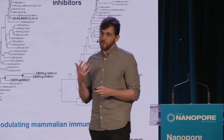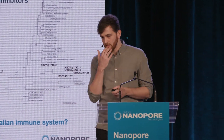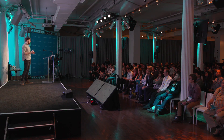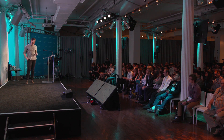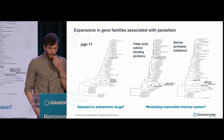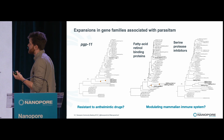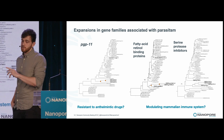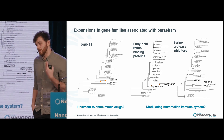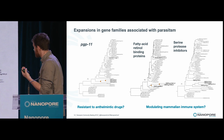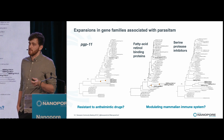We also found expansions in a few gene families. One is PGP11, a gene encoding an ABC transporter in C. elegans, associated with resistance to ivermectin, a widely used anthelmintic drug. It's possible this expansion in C. bovis relates to an ability to withstand drugs being used against the cow. Two other interesting gene families were fatty acid and retinoid binding proteins, and serine protease inhibitors. Both have been independently studied in other nematode parasites because they're believed to play a role in modulating the mammalian host immune response — so these expansions may represent C. bovis doing something active against the cow's immune response.